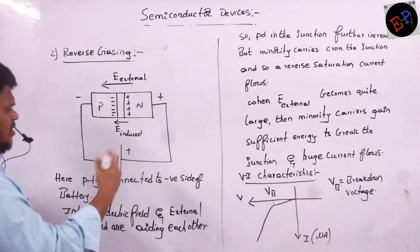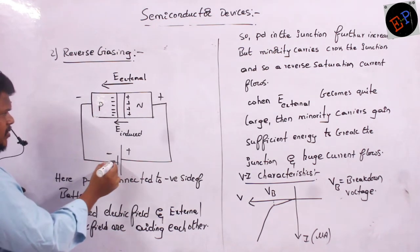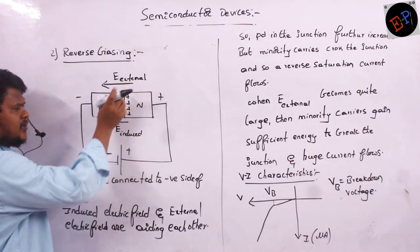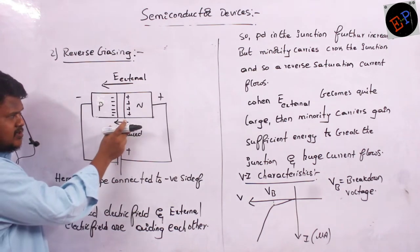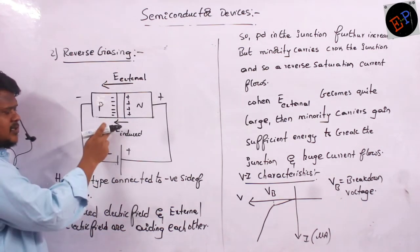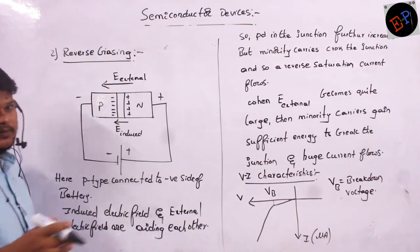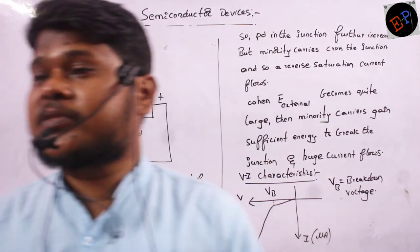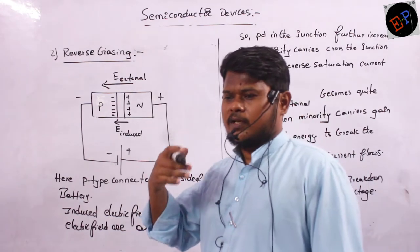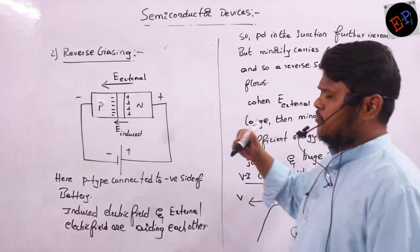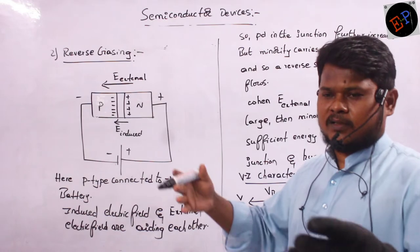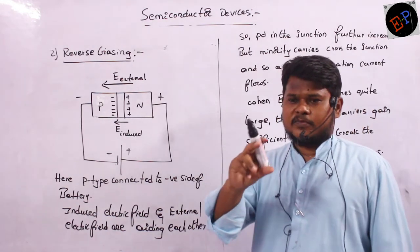Next, we study reverse biased condition — exactly the opposite connection. Positive side connected to negative, negative side connected to positive. Therefore, the induced electric field and external electric field are in the same direction — they aid each other and make the field very strong. If electric field increases, potential difference also increases, so current flow is absolutely not possible because the width of the barrier and the potential difference at the junction have increased.